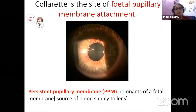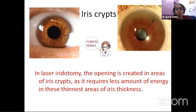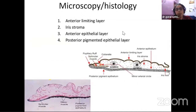A colaret has embryological significance. The fetal pupillary membrane is attached to the colaret, and you very commonly see persistent pupillary membrane — filiform things attached to the colaret of the iris. Now iris crypts — most of us spend quite a lot of time in the glaucoma clinic trying to find a peripheral iris crypt to perform a laser iridotomy, because it is very thin there and you need a very small amount of laser energy to open the iridotomy.